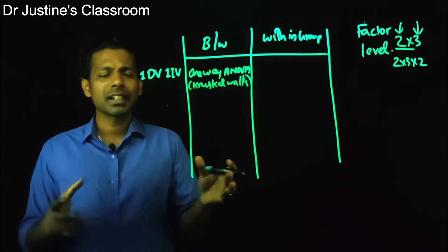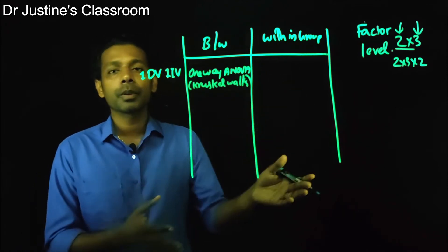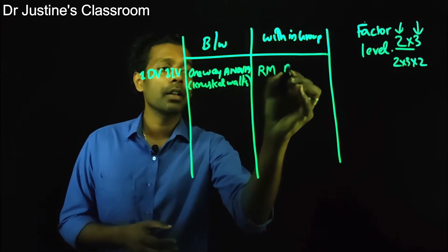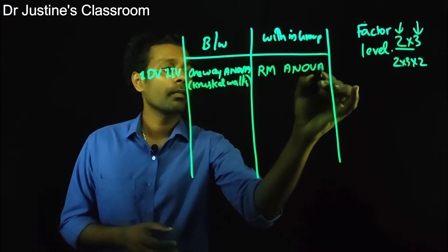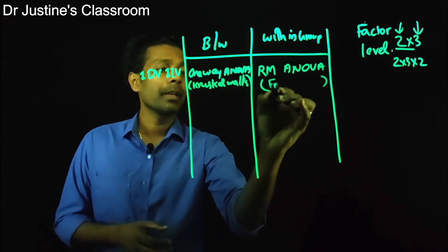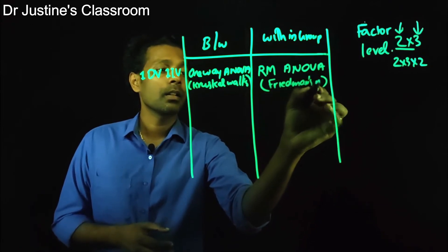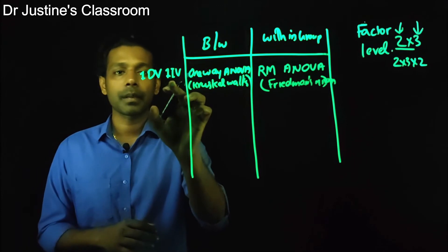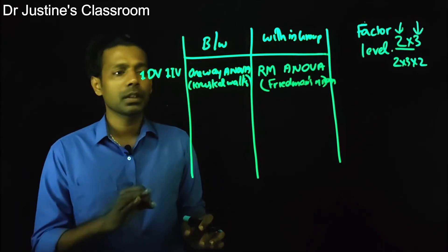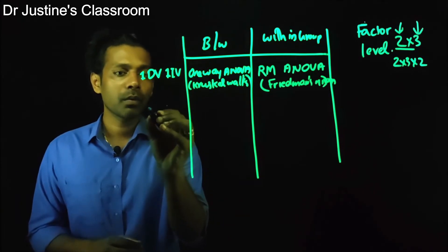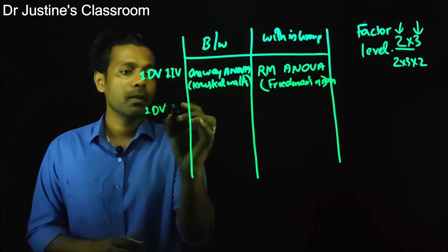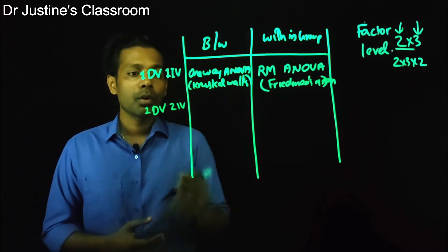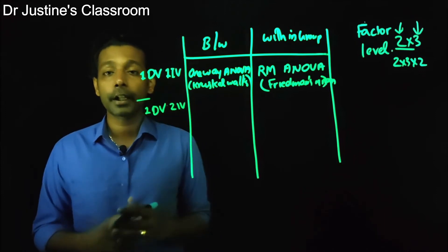For a within-group condition — for example, one dependent variable like happiness measured at pretest, posttest, and follow-up — we use Repeated Measures ANOVA (RM ANOVA). The non-parametric alternative is Friedman's ANOVA. This applies when you have one dependent variable and one independent variable with more than two groups. If there are only two groups, use a t-test. What if you have one dependent variable and two or more independent variables?